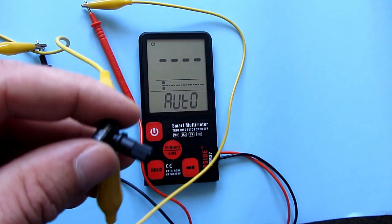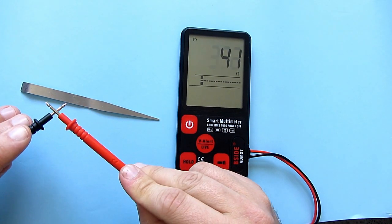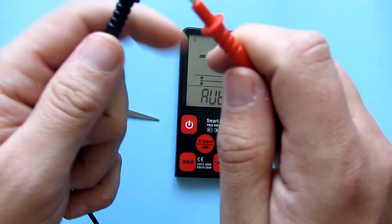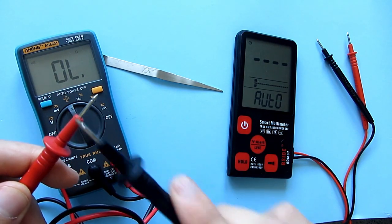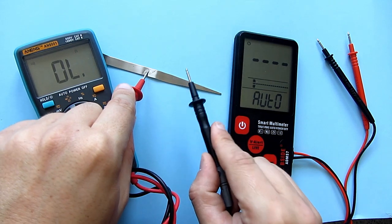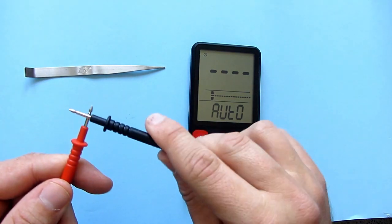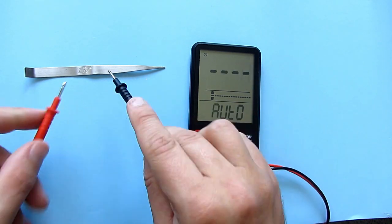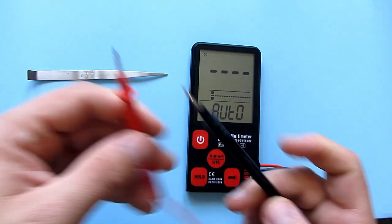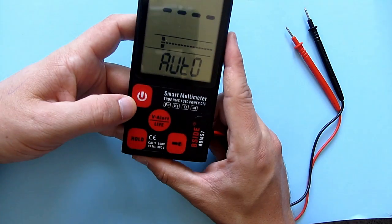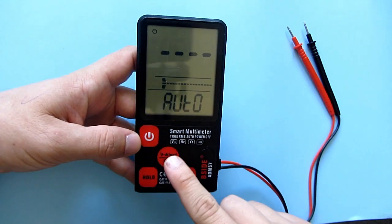There is also continuity test. If resistance is low, the multimeter will beep. But if I compare continuity test to my other multimeter, we can see that the smart multimeter has a very slow continuity test. So it is not so great for continuity test.